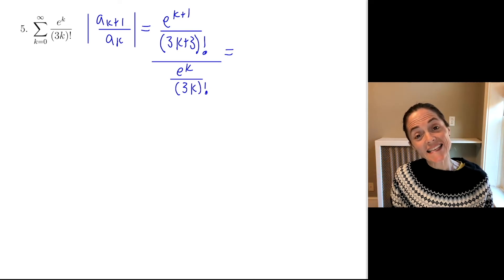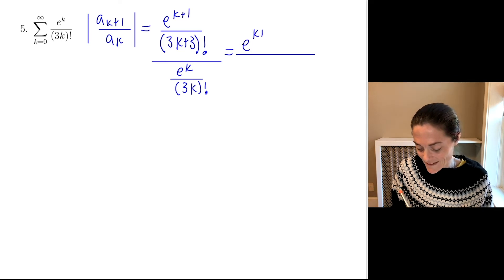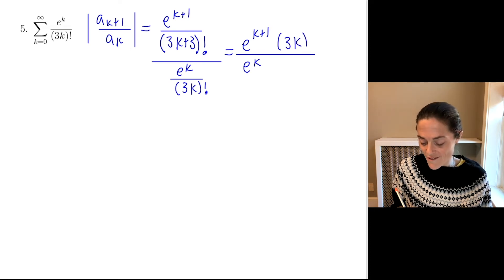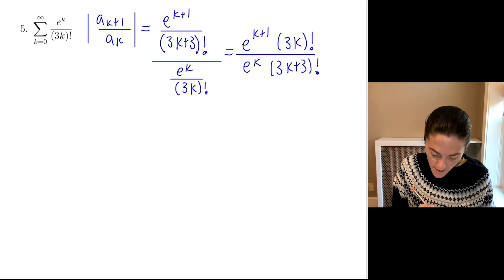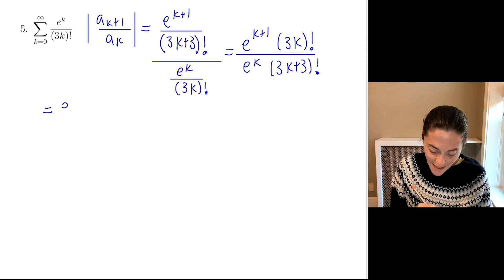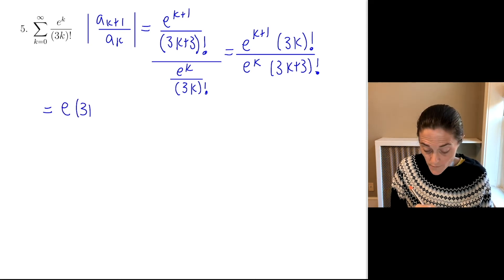Invert, multiply, line things up. My numerator, I have e to the k plus 1. My denominator, I have e to the k. My numerator, I have 3k factorial. My denominator, I have 3k plus 3 factorial. Well, let's simplify this. I will come here for simplification. First of all, you notice I have an e in the numerator, and then I will recopy this for the moment.